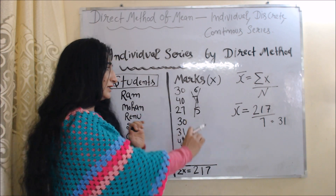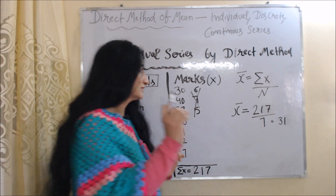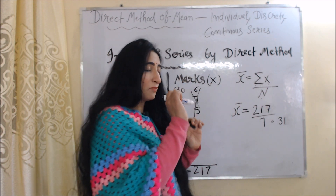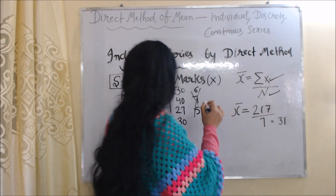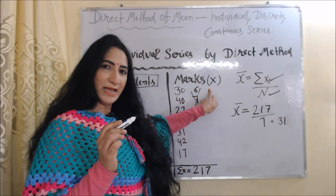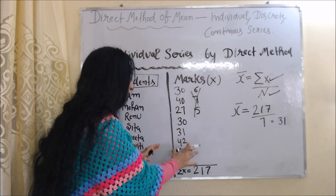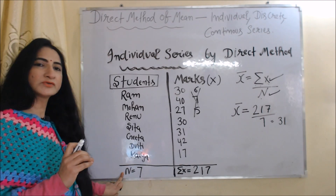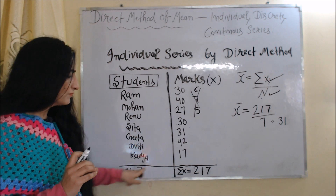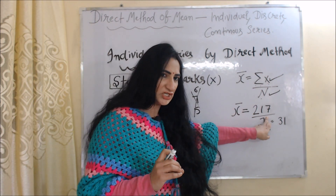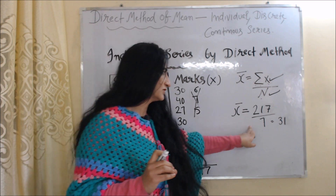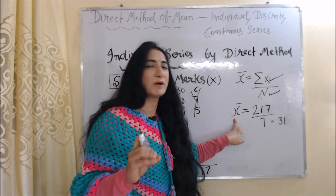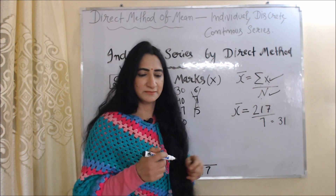The formula for calculating mean by direct method in individual series is x̄ = Σx / n. According to this formula, we require Σx and n. Marks are represented by x, and the sum total of marks obtained by all students is Σx. Total number of students is n. The value of Σx is 217 and the value of n is 7. 217 divided by 7 equals 31. This 31 is our mean.